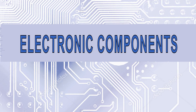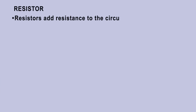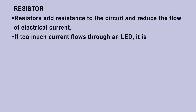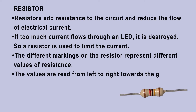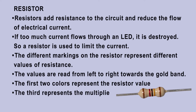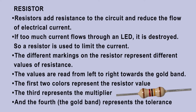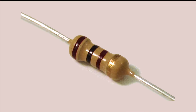Now let us see about electronic components. Resistors add resistance to the circuit and reduce the flow of electrical current. If too much current flows through an LED, it is destroyed, so a resistor is used to limit the current. The different markings on the resistor represent different values of resistance. The values are read from left to right towards the gold band. The first two colors represent the resistor value, the third represents the multiplier, and the fourth represents the tolerance — this is the resistance color code. For example, this resistor has brown, black, brown color bands, so the resistance is 100 Ohms: first band is 1, second band is 0, and the multiplier is 10.